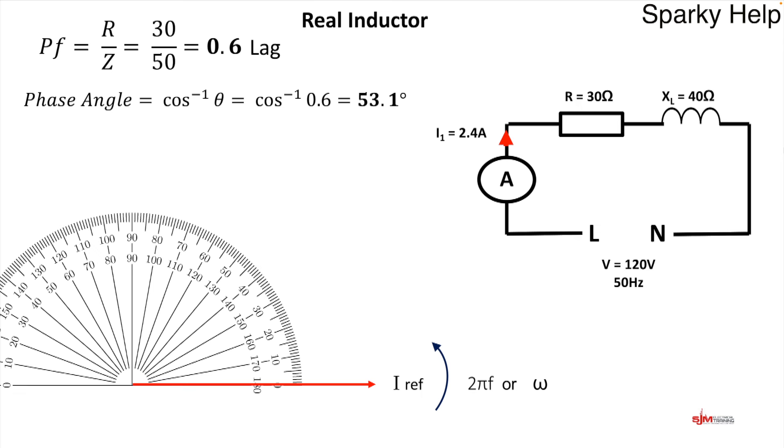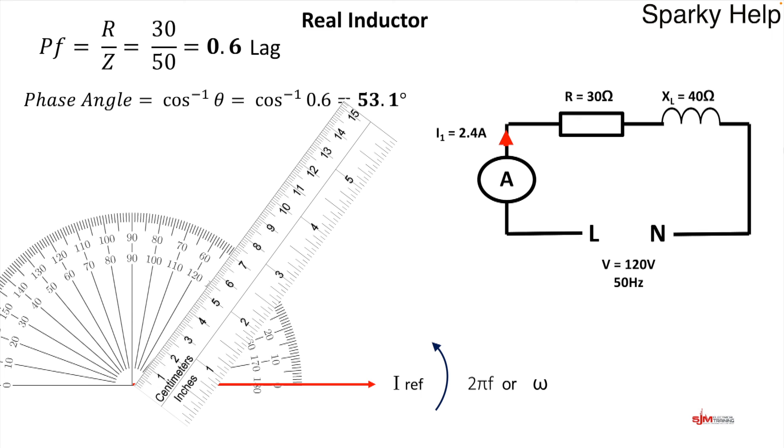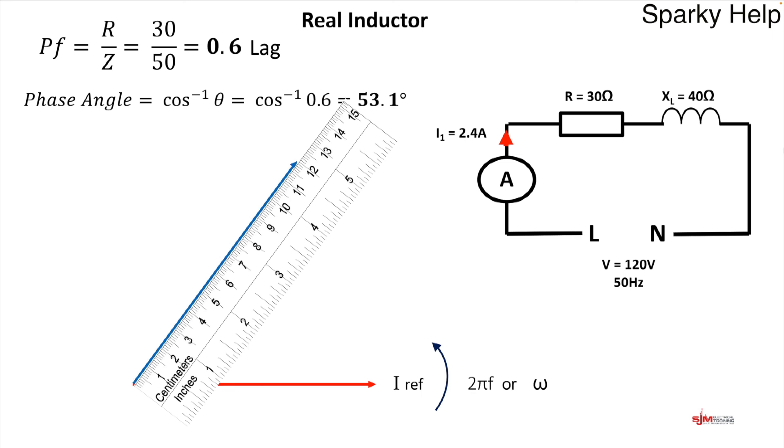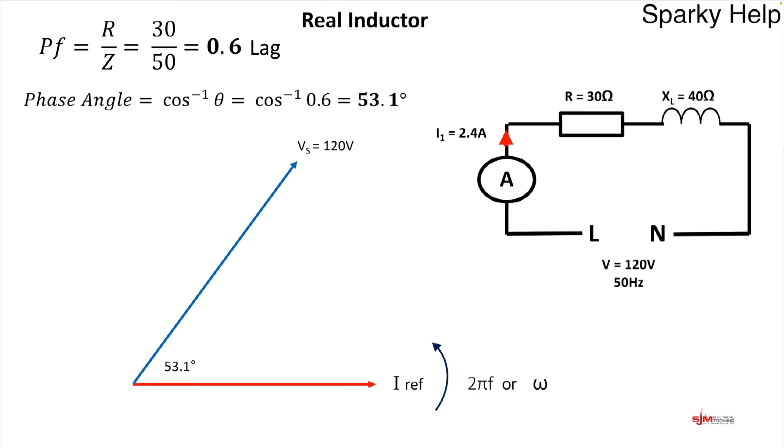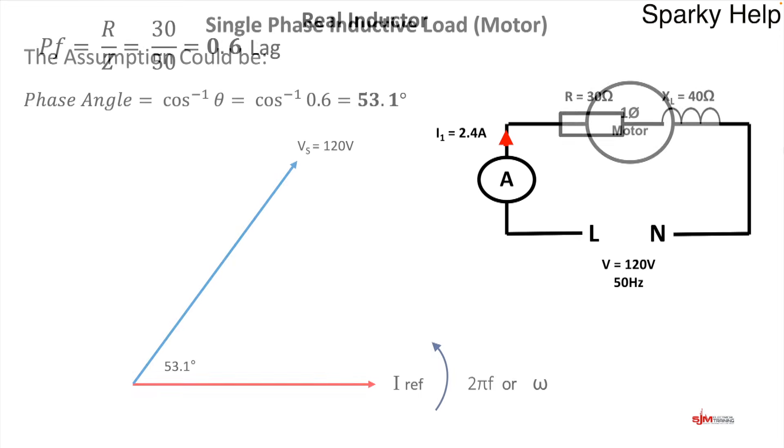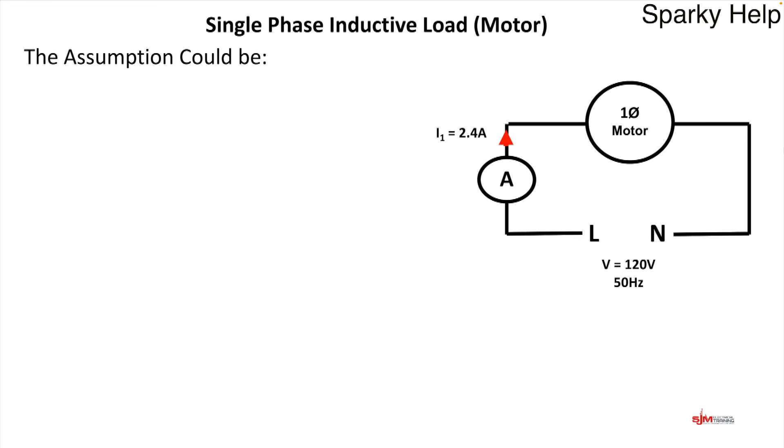So let's draw the phasor diagram. Well, as this is a series circuit, we make I the reference. We can put in a protractor of 53 degrees. We can draw these to scale. And we can put the voltage in. And it's 120 at 53 degrees. And the current lags the voltage. So that's our phasor diagram for it.